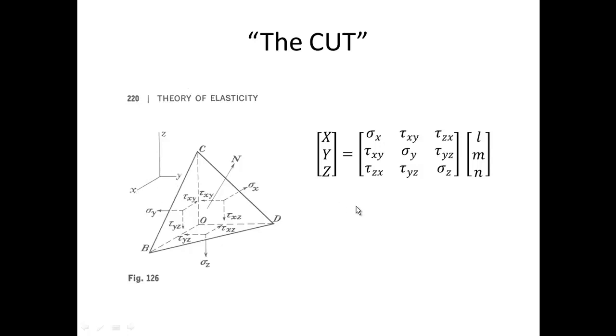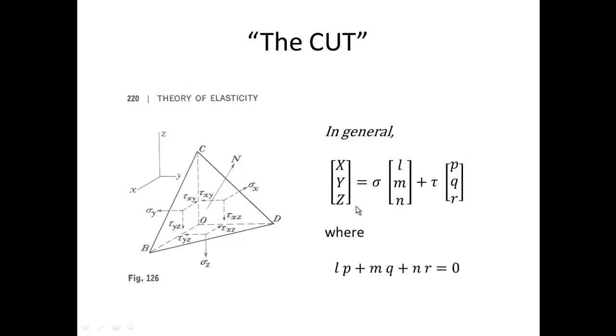Pondering that the stresses X, Y, Z has a component normal to the plane BCD, and a second component tangential to the plane BCD, one could write this equation. Where the scalar sigma is the normal stress magnitude. And where the scalar tau is the tangential shear stress magnitude. Where p, q, and r are the direction cosines of the direction of the tangential shear and where the two vectors are perpendicular.